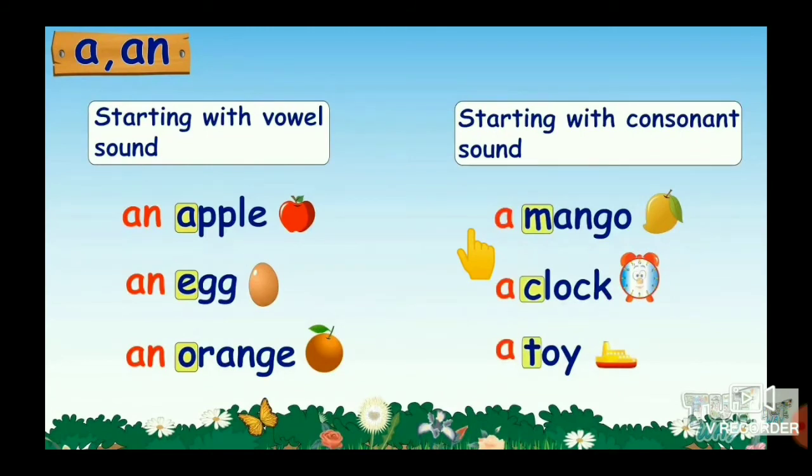Here observe children, when a singular naming word begins with a sound, any of the consonants, we use A before the word. For example, a mango, a clock, a toy. Here, starting with all consonants only, M, C, T. These are all consonants. That's why we use these words before A only.